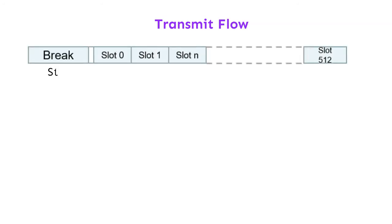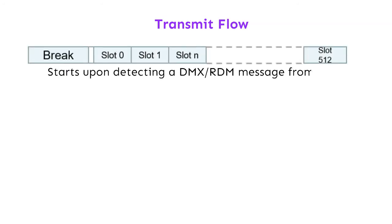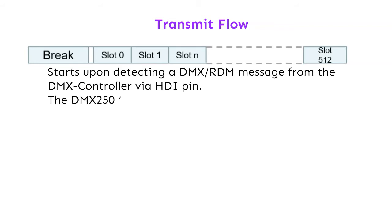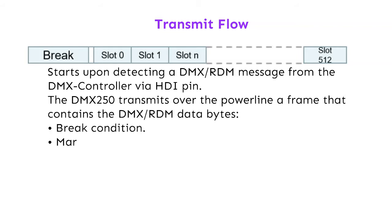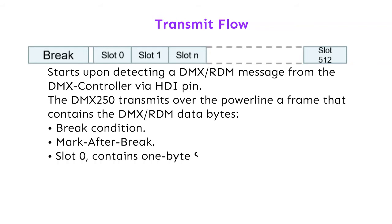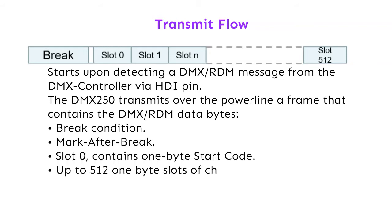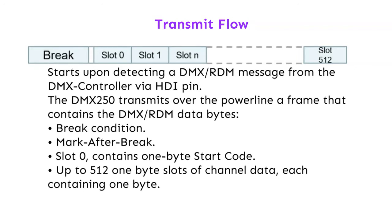Transmit flow starts upon detecting the DMX-RDM message from the DMX controller via the HDI pin. The DMX-250 transmits over the power line a frame containing the DMX-RDM data bytes: a break condition, mark after break, slot 0 containing the 1-byte start code, and up to 512 slots of channel data each containing 1 byte.